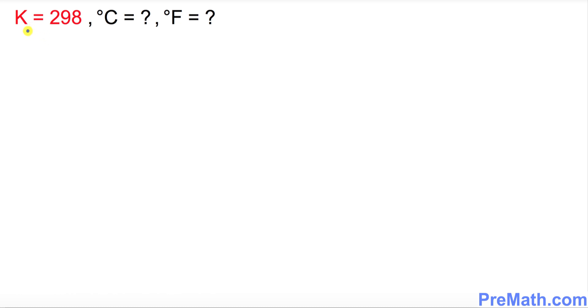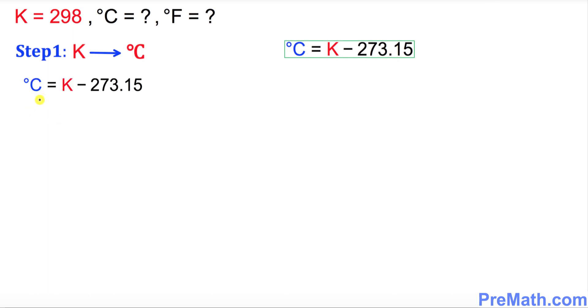The first one is K equals 298 is given, and we want to figure out C and F. In the very first step, we're going to convert K to degrees Celsius, and this is the formula that you can see on the right-hand side. Let's go ahead and apply the values for K. So C equals K is 298 minus 273.15.